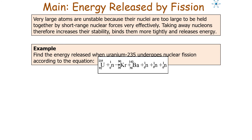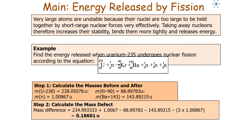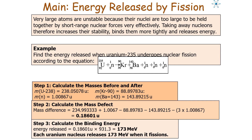For a worked example: very large atoms are unstable because their nuclei are too large to be held together effectively by the short-range strong nuclear forces. To find the energy released when uranium-235 undergoes fission, first calculate the masses in u before and after, then calculate the mass defect by finding the difference in mass of reactants and products. Multiply the mass difference in u by 931.3 to get the value in MeV. In this example, each uranium nucleus releases 173 MeV of energy when it fissions.